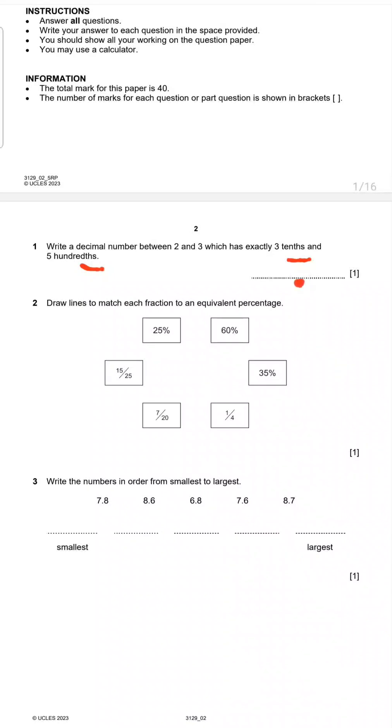Write a decimal number between 2 and 3, which has exactly three tenths and five hundredths. If you see 'th' here, the name of place value with 'th', you should understand that numbers you need to write after a decimal point. First, let me put a decimal point. This is a decimal point. And before a decimal point, you need to write what? A whole number. So your decimal number is between 2 and 3, it's bigger than 2 and less than 3. So my whole number should be 2.